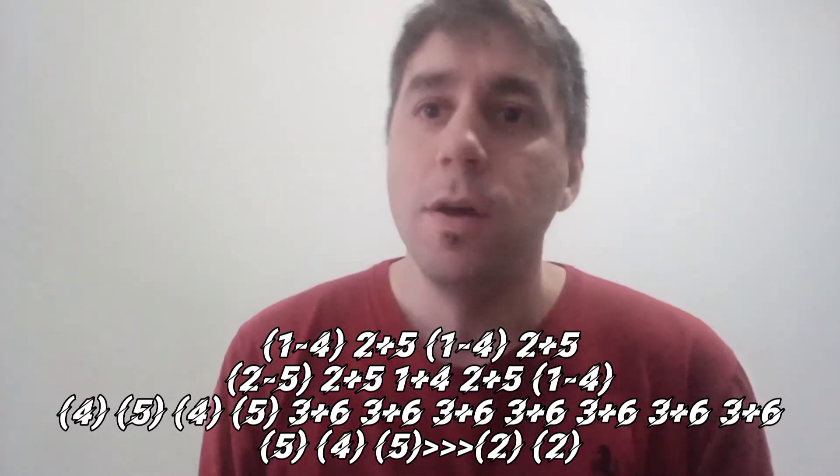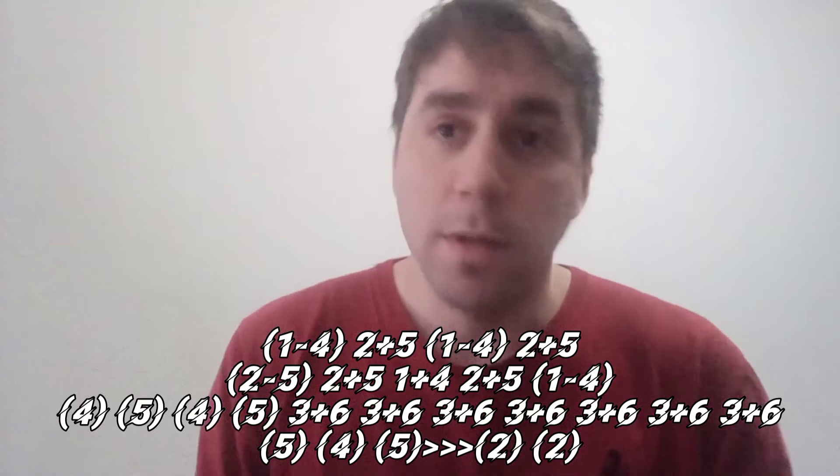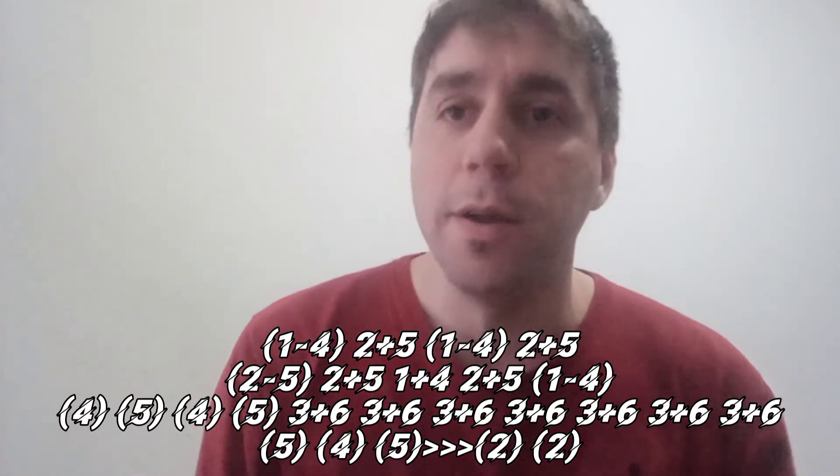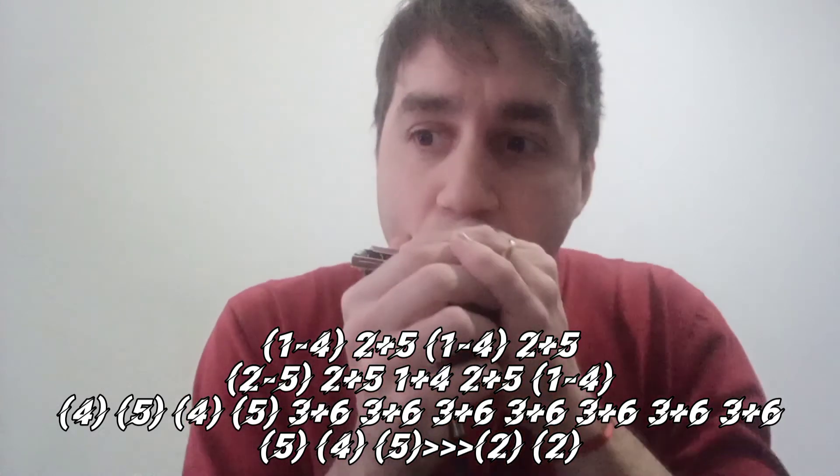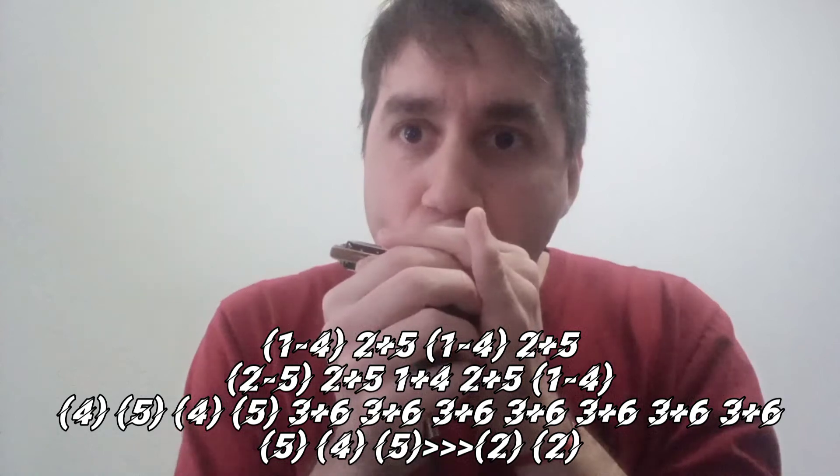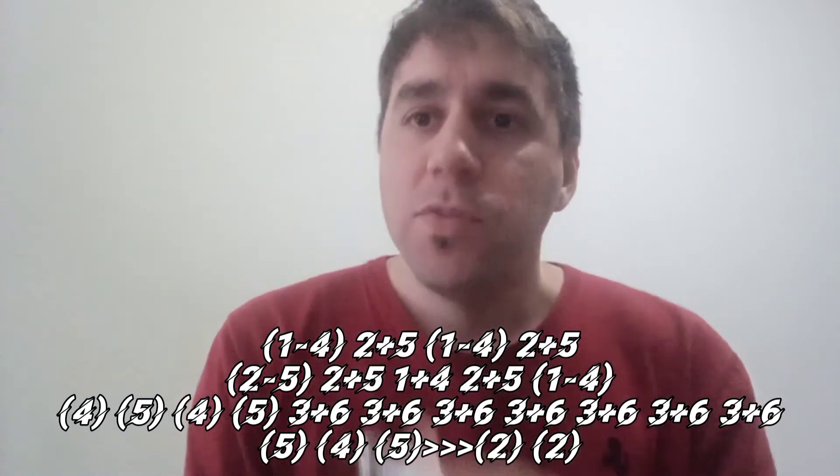Es un armonicista más moderno, William Clark, que los que les acabo de nombrar, pero tiene un poco de cada uno de los que les nombré. Bueno, empezamos. Entonces, fíjense que no es solamente la octava, sino que hay una interposición de lengua.